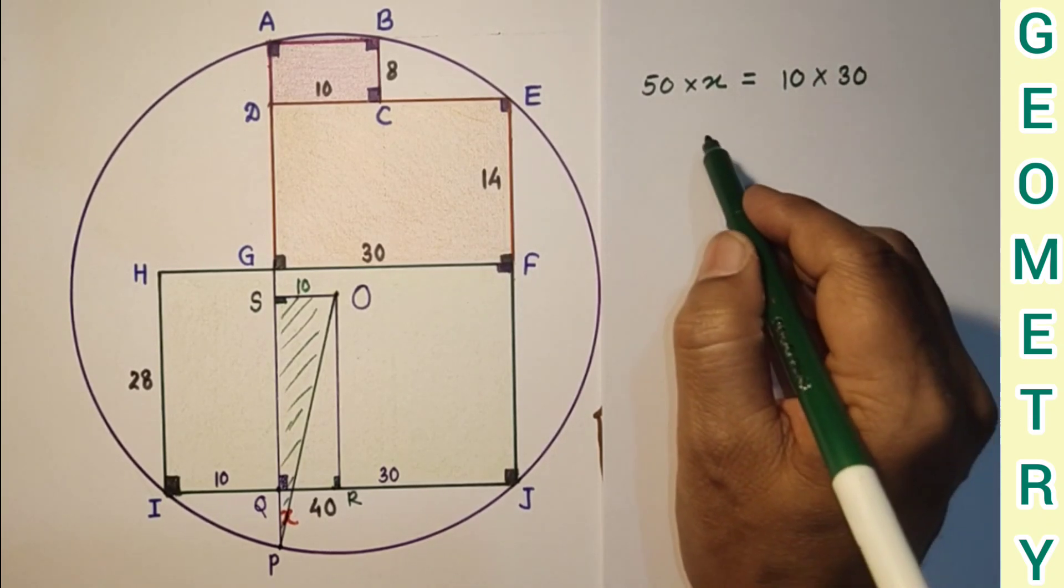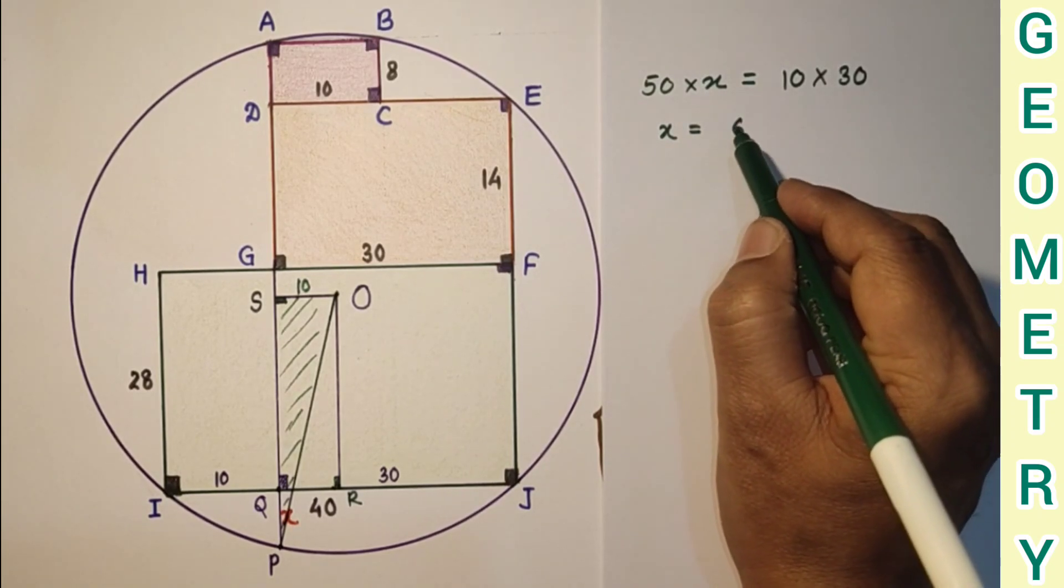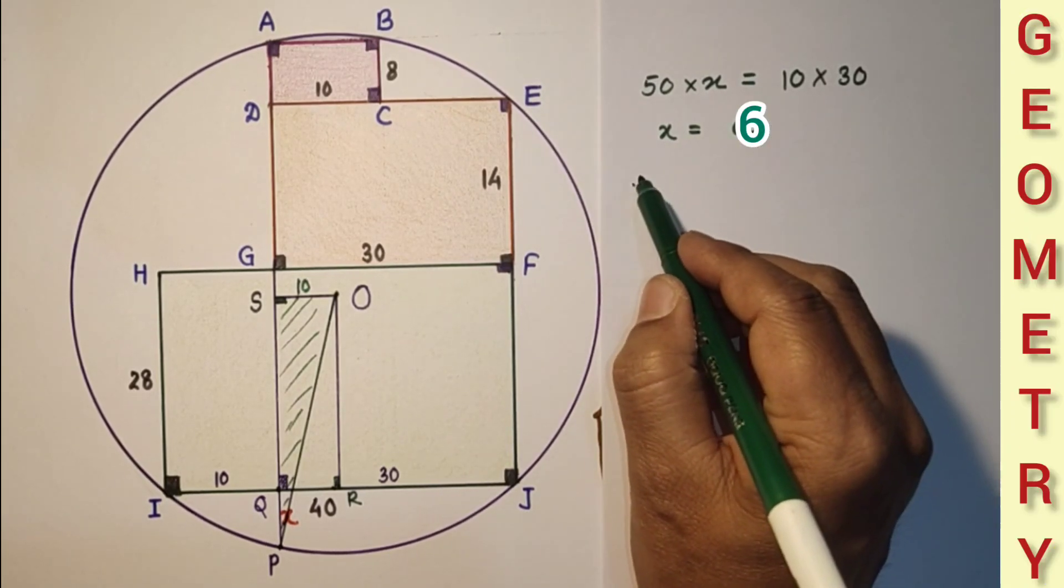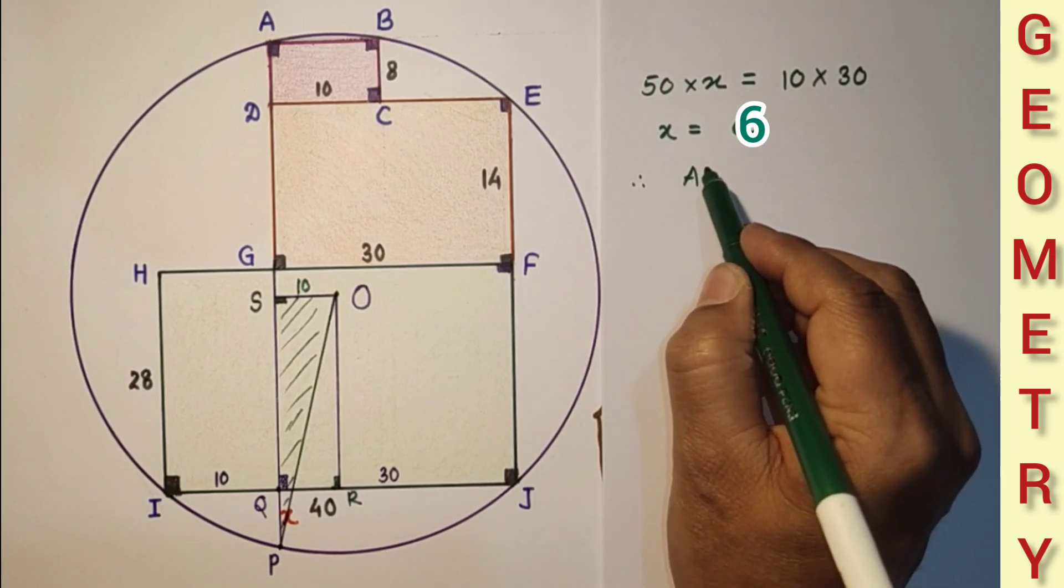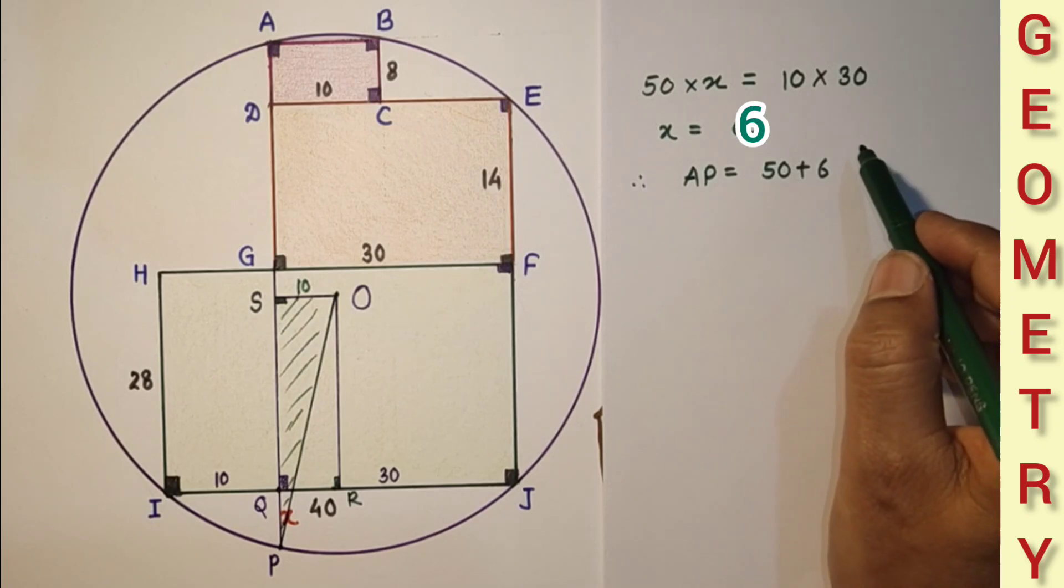And we found X as 300 by 50 which is 6. So therefore AP is equal to 50 plus X, means 50 plus 6, which is 56.